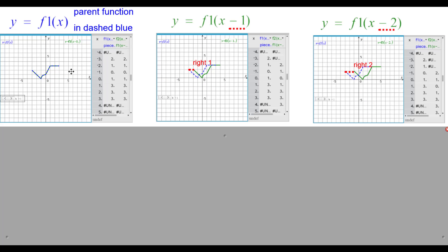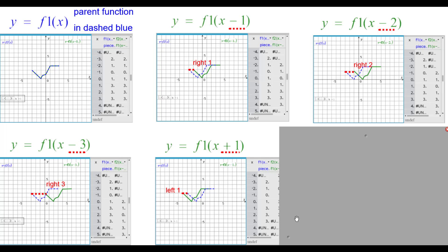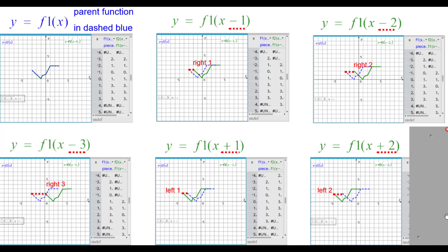And here we have a generic function y equals f1 of x. When it's f1 of the quantity x minus 1, it shifts right 1; x minus 2, right 2; x minus 3, right 3. Using x plus 1, it shifts left 1; x plus 2, left 2.